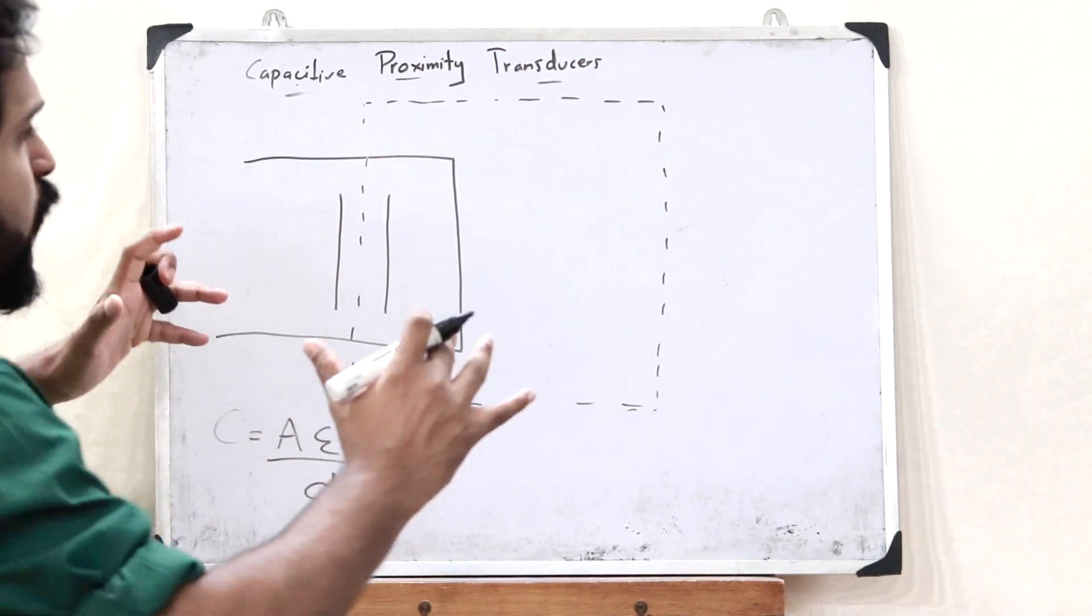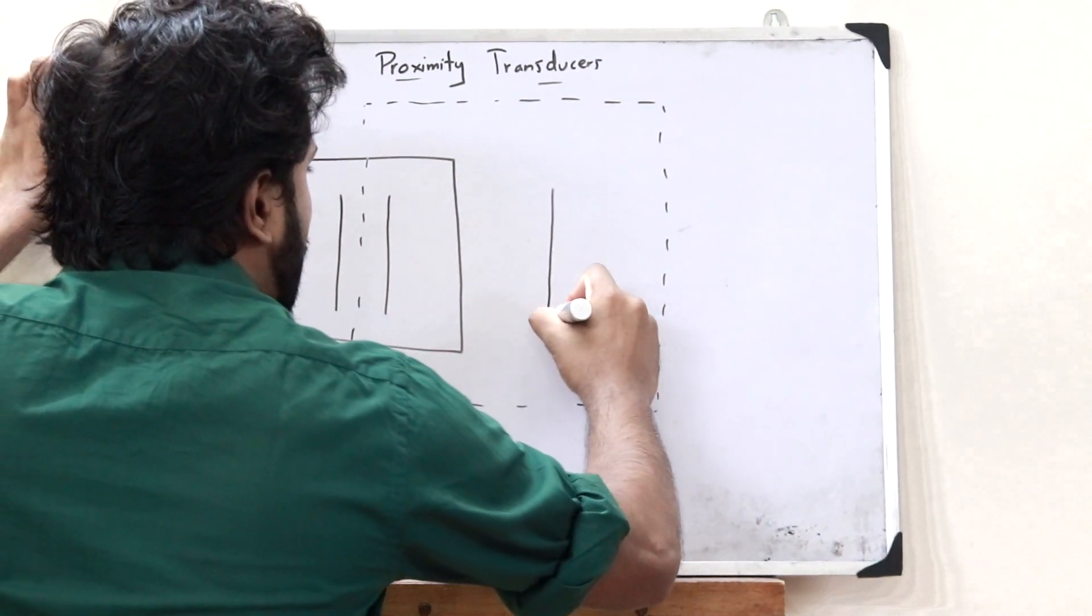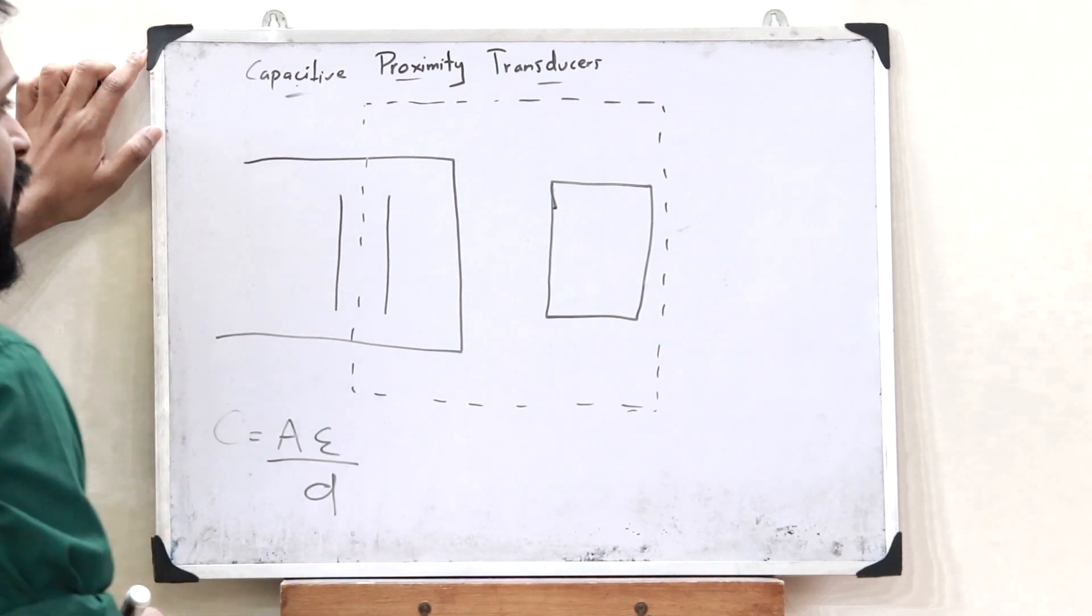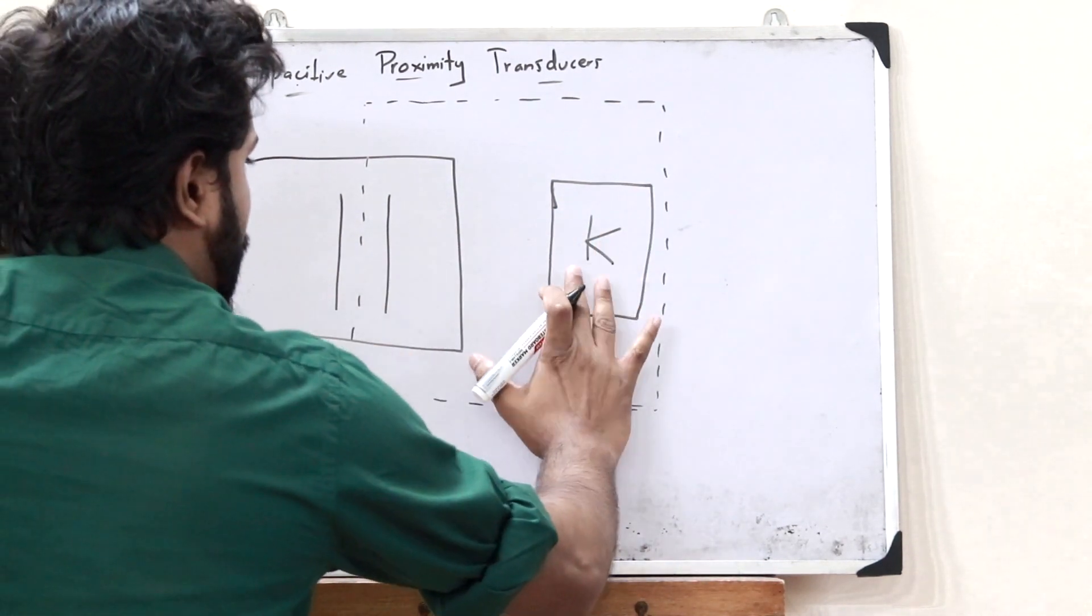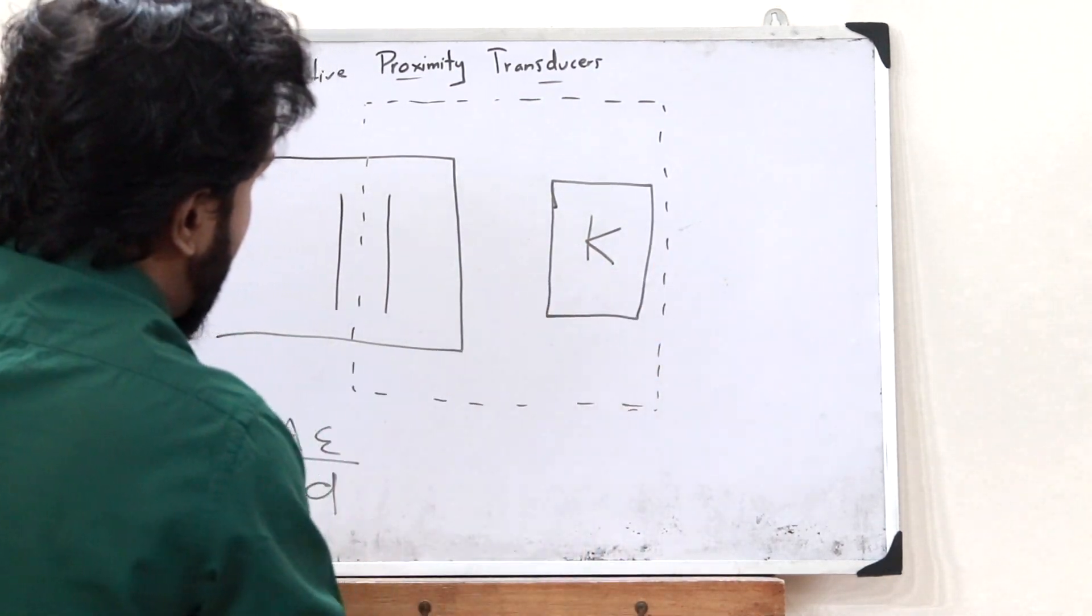But let us assume that a particular material of a particular dielectric constant comes in the vicinity of this particular capacitor. What happens is that due to the presence of this particular material which has got a dielectric constant greater than air,